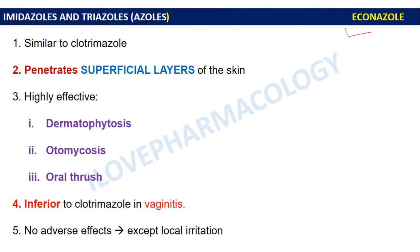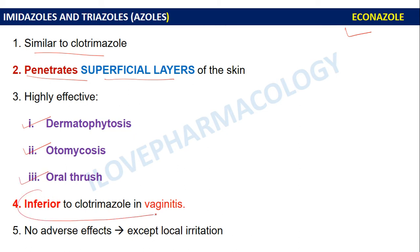Econazole has similar action to clotrimazole but has good penetration ability into the superficial layers of the skin. It is highly effective against dermatophytosis, otomycosis, and oral thrush, but is inferior to clotrimazole in the treatment of vaginitis. There are no serious adverse effects except for local irritation.